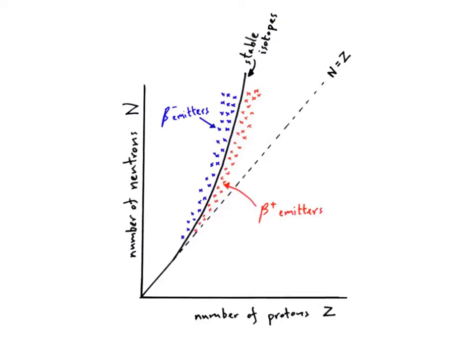You can see it's marked where you get beta minus emitters - just above the stable isotope line, which is here in black - and you get your beta plus emitters just below your stable isotope line. This corresponds with our definitions: beta minus emitters have an excess of neutrons, so they're above the stability line, and beta plus emitters have an excess of protons, so they're just below the stability line.